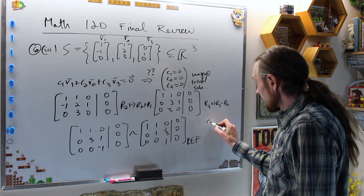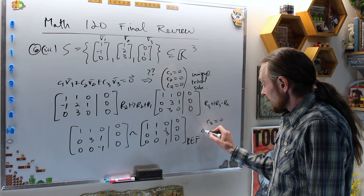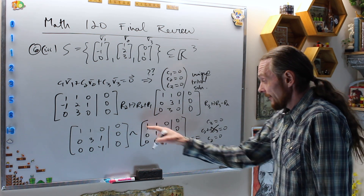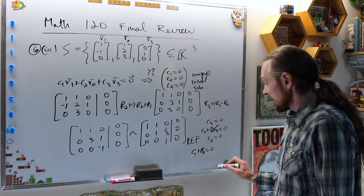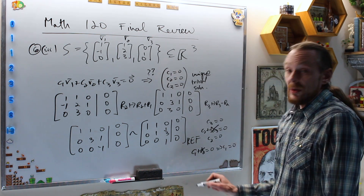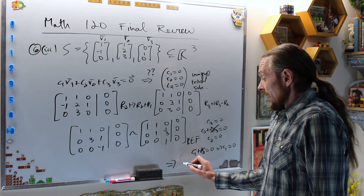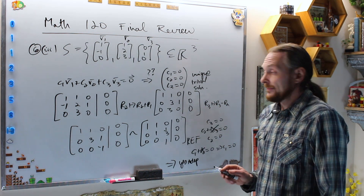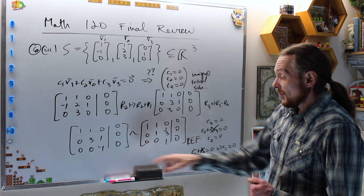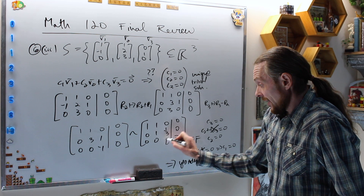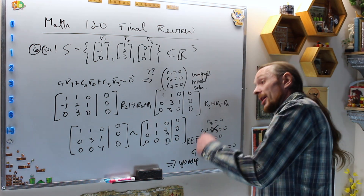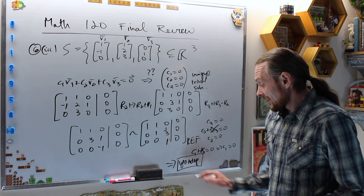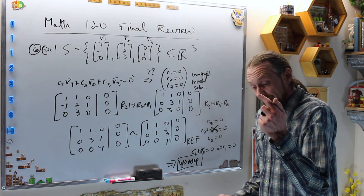From REF: c₃ = 0. The second equation gives c₂ + (1/3)c₃ = 0, so c₂ = 0. The first equation gives c₁ + c₂ = 0, so c₁ = 0. We have the unique trivial solution, which means yes — linearly independent. If you get a row of zeros or infinitely many solutions it's not independent, not spanning, not a basis. But here: yes independent if and only if yes spanning, if and only if yes a basis.